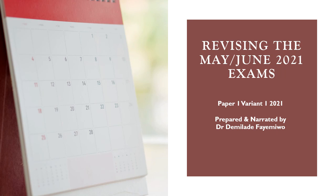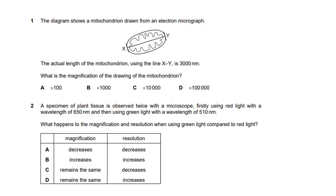Let's get into this. This is paper one, the May June 2021 exam. Question one shows a mitochondrion drawn from an electron micrograph. The actual length of the mitochondrion using the line X to Y is 3000 nanometers. What is the magnification of the drawing? Always bear in mind that magnification equals image size over actual size.